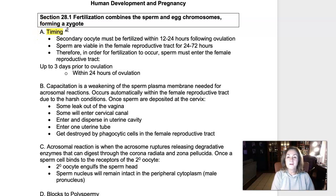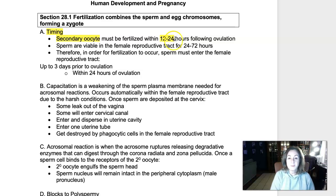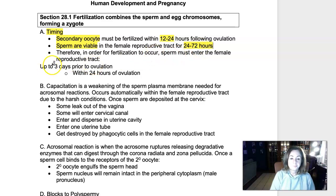Timing is everything with fertilization. The secondary oocyte has a very short lifespan — it only lives between 12 and 24 hours after ovulation. So if fertilization is going to take place, it has to happen within that short time period. Sperm cells can live longer than the secondary oocyte in the female reproductive tract — sperm are viable for about one to three days. Therefore, in order for fertilization to occur, sperm have to be in the female reproductive tract up to three days prior to ovulation or within 24 hours after ovulation.